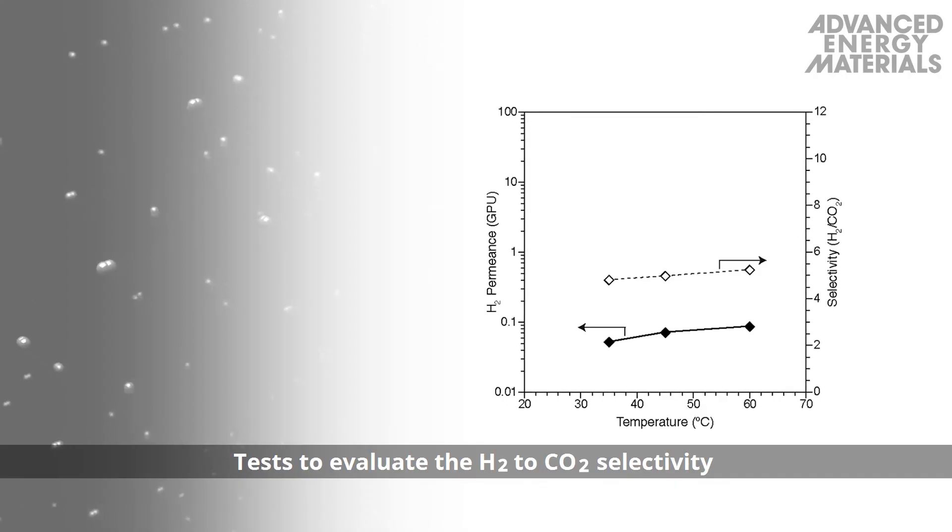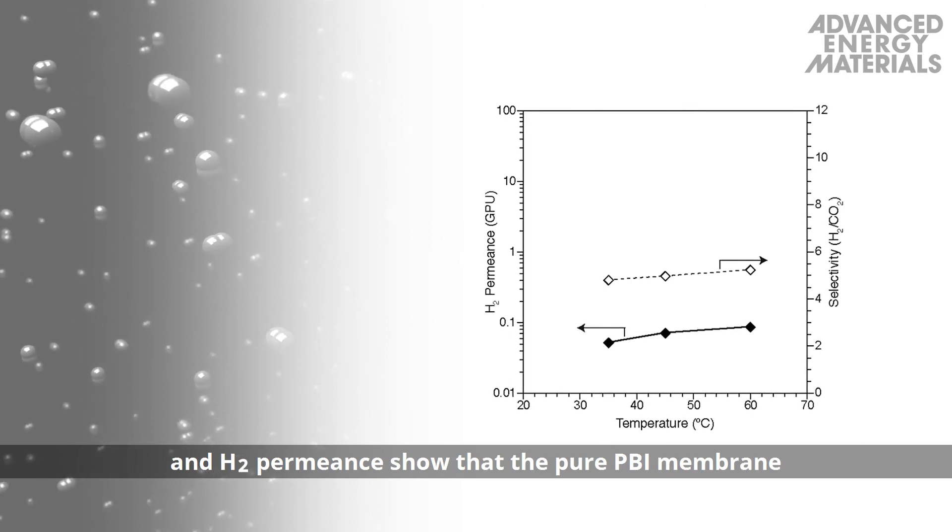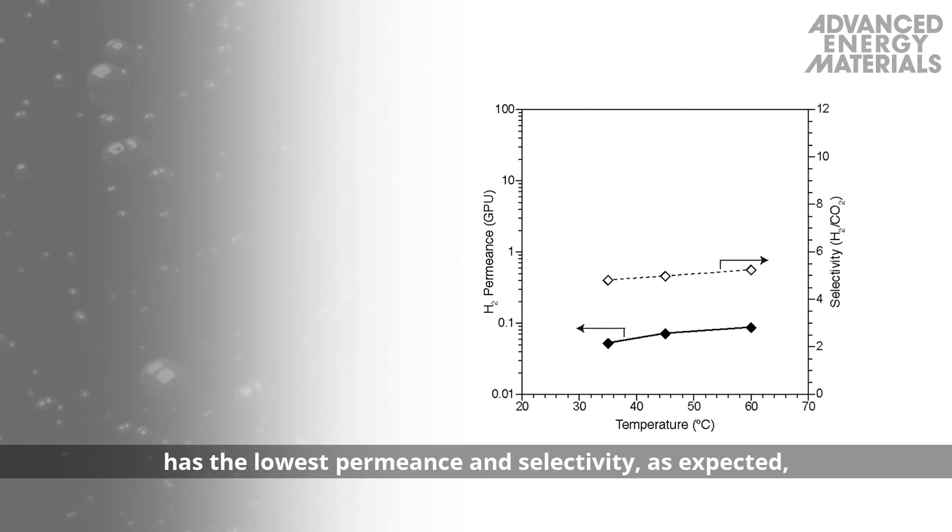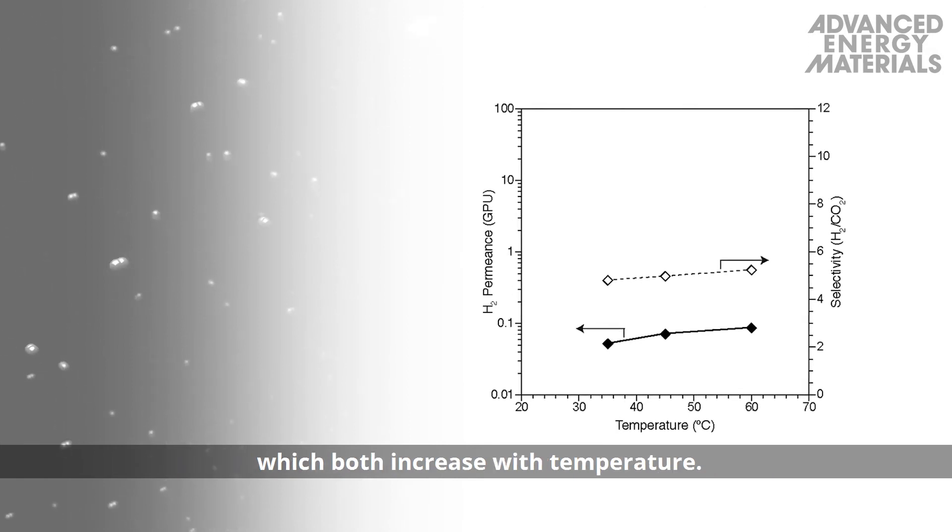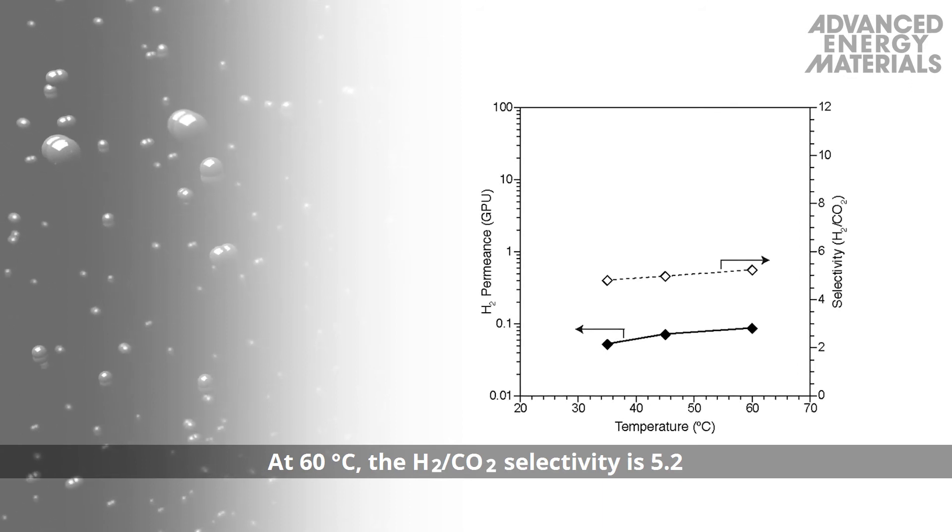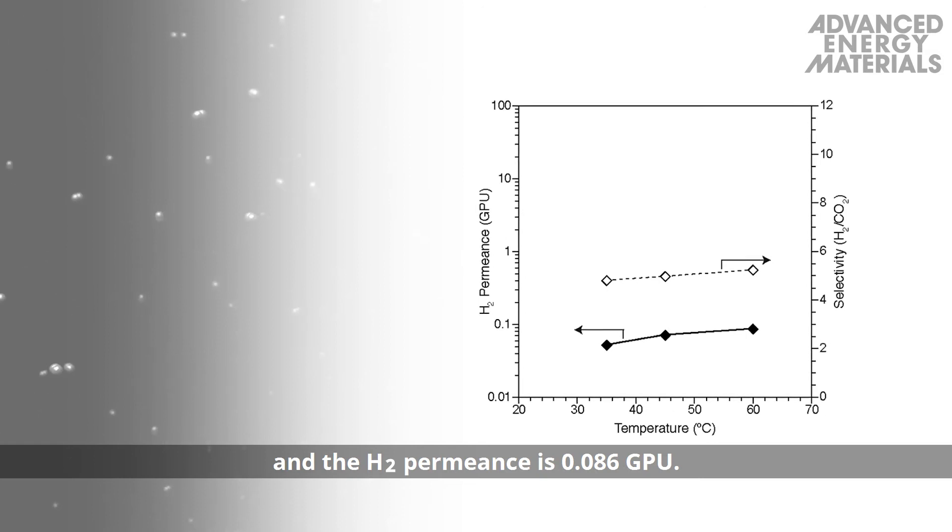Tests to evaluate the H2-CO2 selectivity and H2-permeance show that the pure PBI membrane has the lowest permeance and selectivity, as expected, which both increase with temperature. At 60 degrees C, the H2-CO2 selectivity is 5.2, and the H2-permeance is 0.086 GPU.